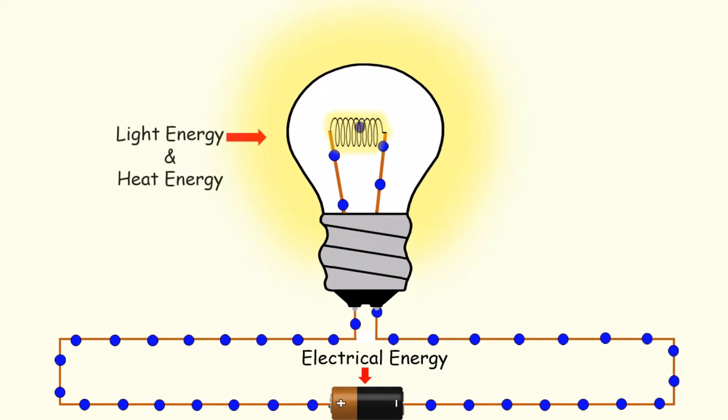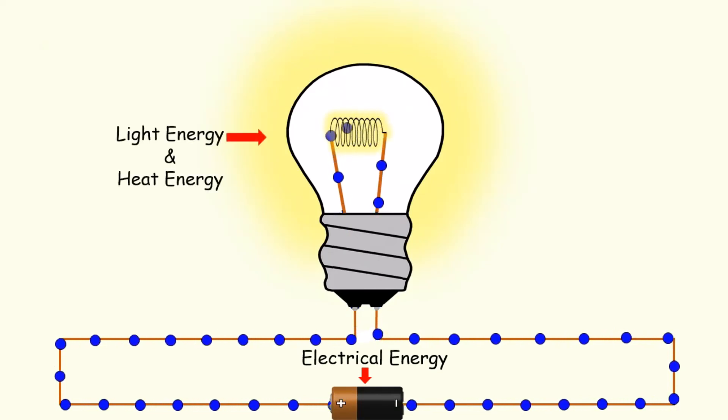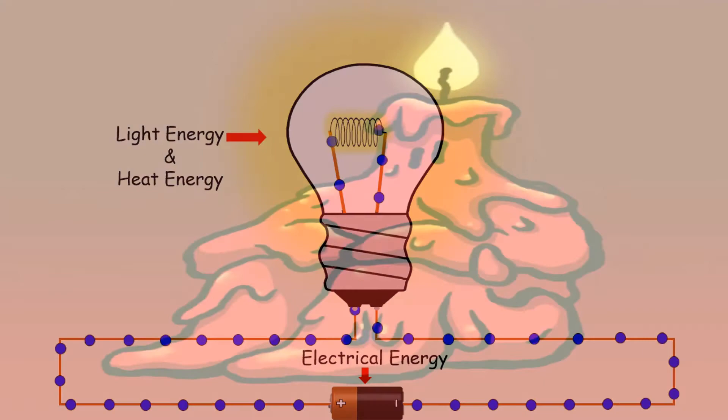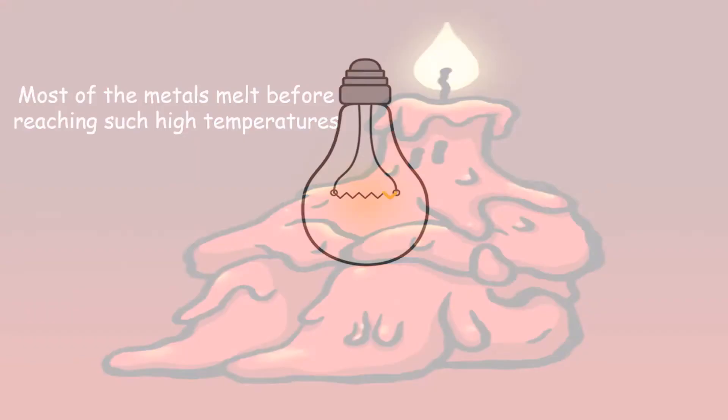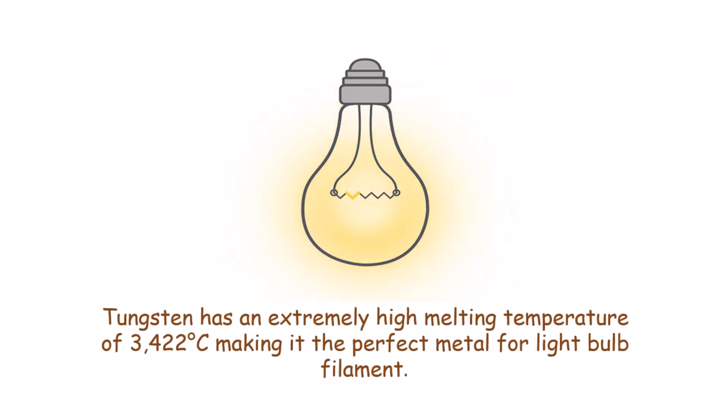Not all metals will emit visible light when heated to extreme temperatures. In fact, most will melt before reaching such temperatures. Tungsten however has an extremely high melting temperature, making it the perfect metal for light bulb filaments.